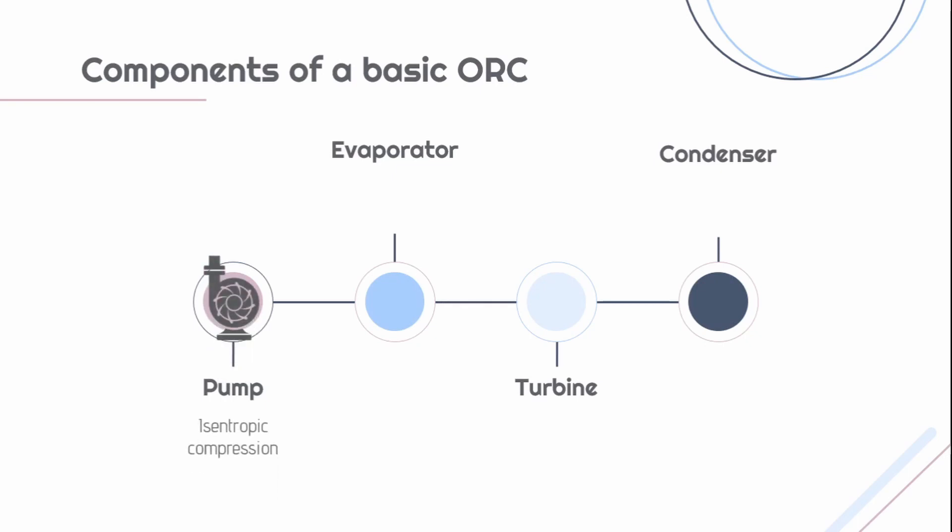The pump increases the pressure of the organic working fluid before the evaporator, which in this case is the solar collector. The solar collector transfers latent heat to the organic liquid using thermal energy. The vaporized fluid then enters a turbine at a high temperature and high pressure and then exits at a lower temperature and pressure, producing power through a generator.